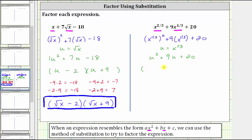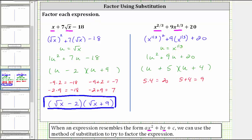If it does factor, it will factor into two binomial factors. Because the first term is u squared, we have a factor of u in each binomial. Because the leading coefficient is one, we determine the factors of positive 20 that add to positive nine. Since five times four is 20 and five plus four is nine, positive five and positive four are the two factors we need. One binomial factor is u plus five, and the other is u plus four. Now we write the expression back in terms of x using u equals x raised to the power of one-third. One binomial factor is x to the one-third plus five, and the other is x to the one-third plus four.